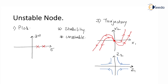A quick review of an unstable node: the poles are on the RHS of the S-plane; this equilibrium point is unstable in nature; and the trajectories are all diverging away from the origin. This completes this video. Thank you for watching.